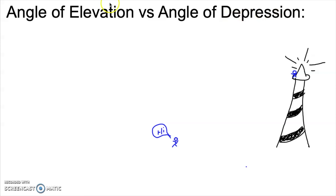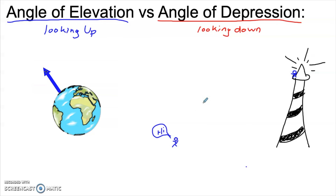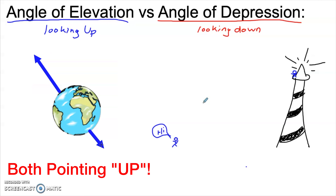When we talk about an angle of elevation versus an angle of depression, an angle of elevation is when we are looking up at something. Angle of depression is looking down. Now, up and down are relative terms. There's no such thing as up in an absolute sense. If you imagine everyone pointed up, you'd be pointing up from the ground, but someone on the opposite side of the world would be pointing in exactly the opposite direction. So up and down are always relative to something.